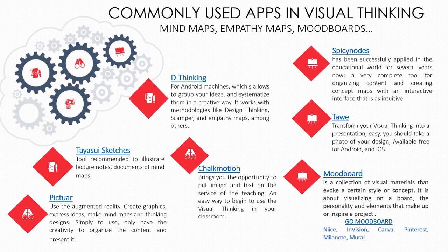The applications represented with a blackboard icon are: Spicy Notes, successfully applied in education for several years — a very complete tool to organize content and create concept maps with an intuitive, interactive interface; and Ta, which transforms your visual thought into a presentation easily by taking a photo of your design, available free for Android and iOS. The Mood Board is a tool that clarifies ideas, downloads inspiration to paper or screen, expresses creativity, and helps communicate ideas. Other tools cited include Go Mood Board, Nice, Envision, Canva, Pinterest, Milanote, and Mural.